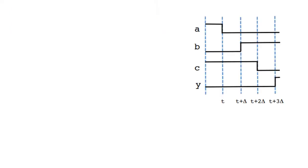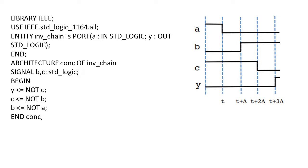Let us see this with a code example. The library is defined as IEEE. We have written an entity with port a as input standard logic and y as output standard logic, then ended the entity. The architecture 'concurrent' is defined with two additional signals b and c of standard logic, with values 0 or 1. The statements are: y <= not c; c <= not b; b <= not a.